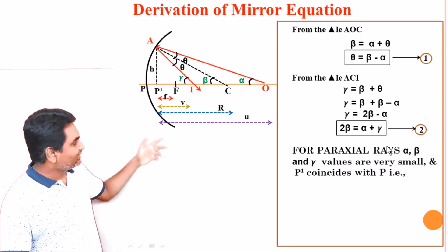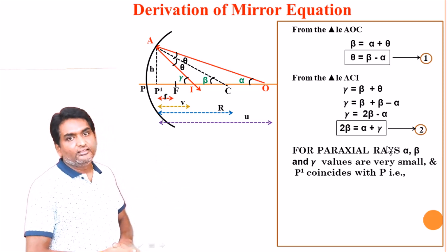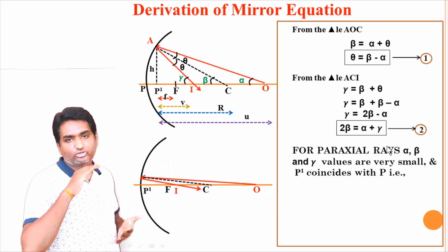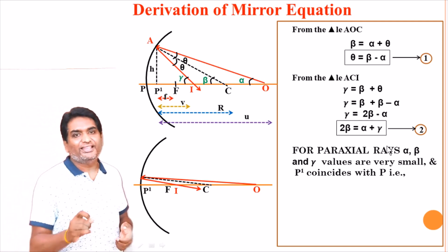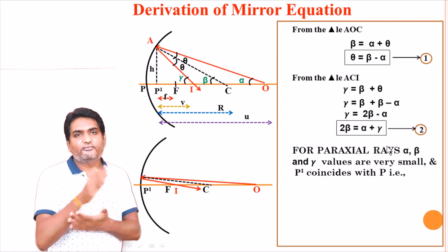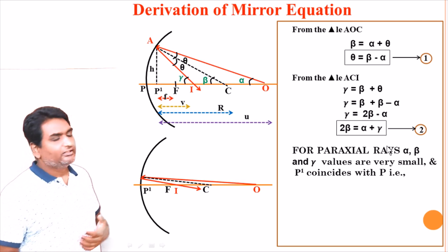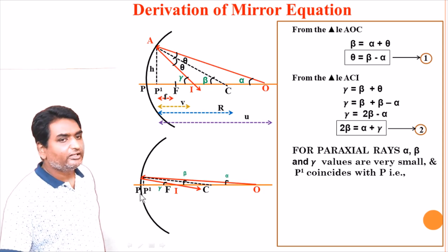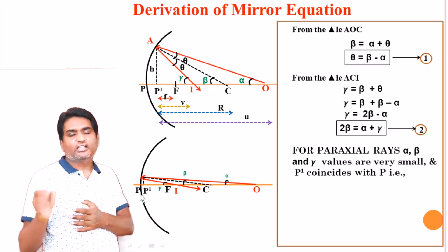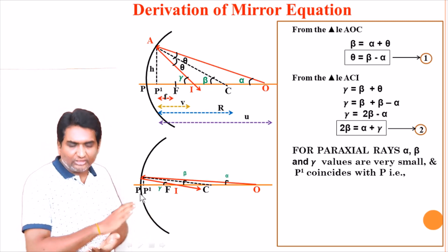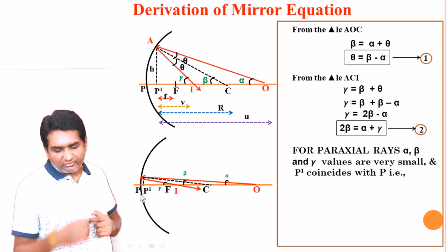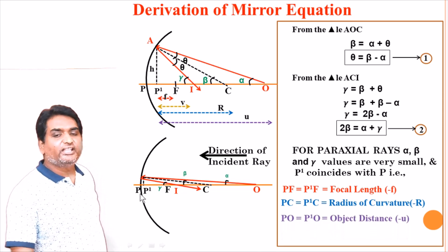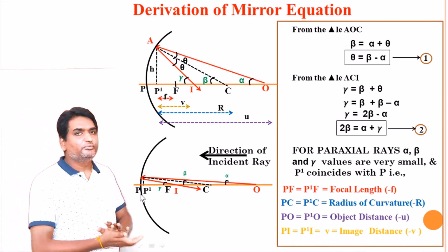If we consider the incident ray as a paraxial ray, then all the angles alpha, beta, and gamma will be very very small, approximately equal to zero. In such cases, the tangent of the small angles equals the angle itself: tan-alpha equals alpha, tan-beta equals beta, tan-gamma equals gamma. Also, the foot of the perpendicular P-dash approximately coincides with the pole P, so all distances can be measured from P-dash: focal length as P-dash-F, radius of curvature as P-dash-C, and object and image distances also from P-dash.